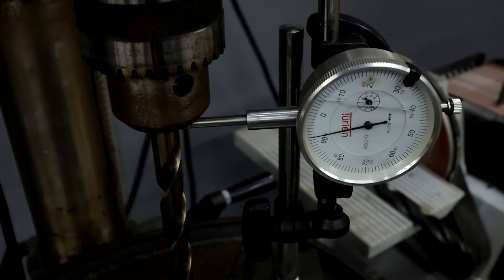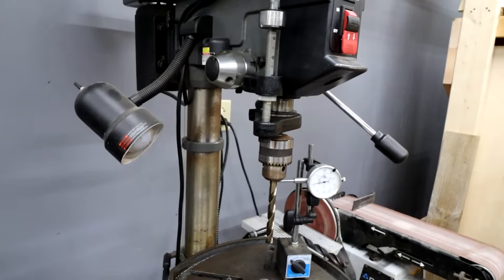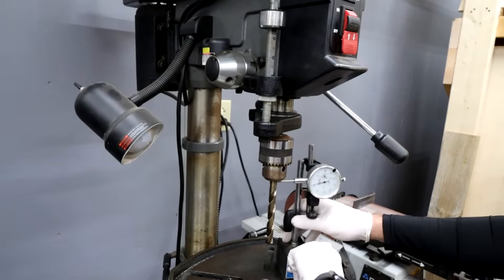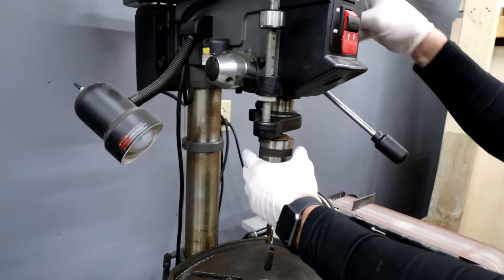So now I want to replace this and see if we can get this any better. We'll use the same drill bit for that test as well. I'm going to remove our mag base dial indicator and take the drill bit out.